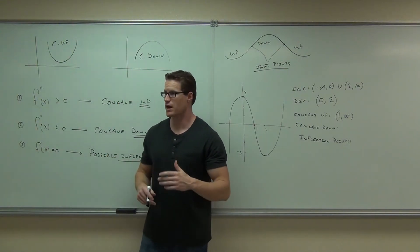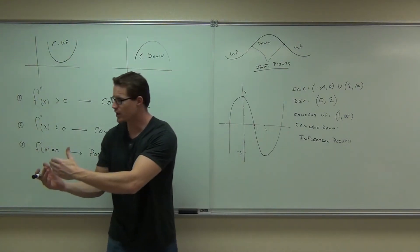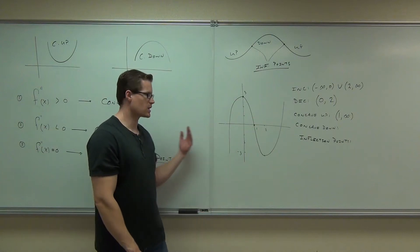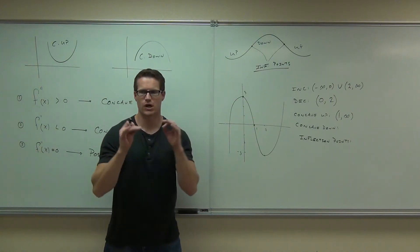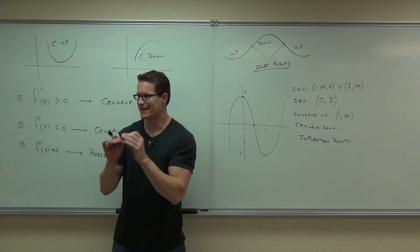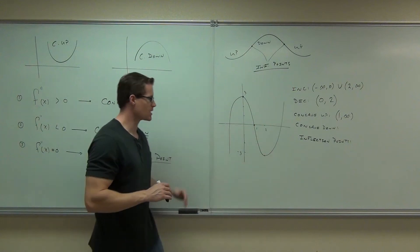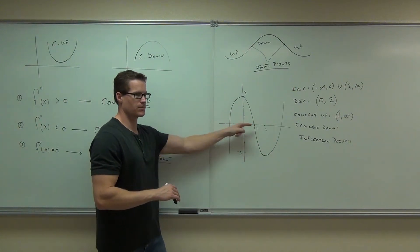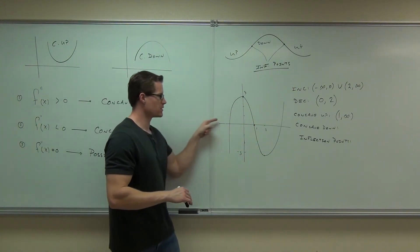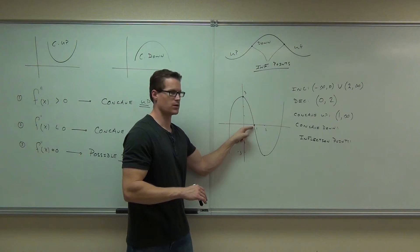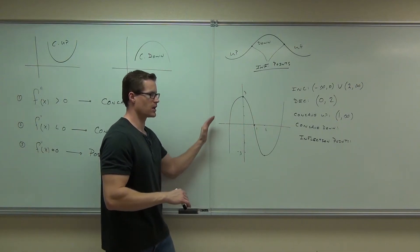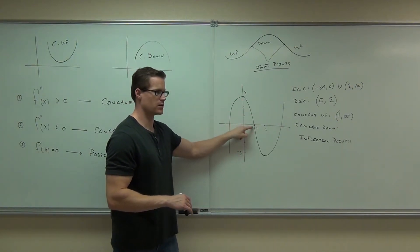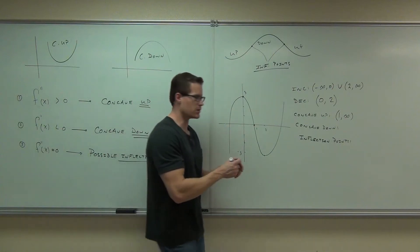Concave down — let's start that. Remember, it has to go in order of a number line. Where do we start being concave down? Remember, you're talking about the x-axis. Where do you start being concave down? Up till what point? One. This is all concave down until you get to here — the x-axis says negative infinity to one.